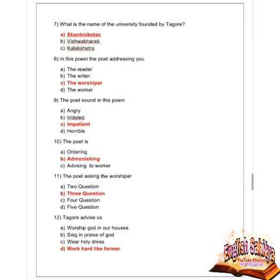Next question: what is the name of the university founded by Rabindranath Tagore? Options are Shanti Niketan, Vishwa Bharati, and Kala Kshetra. Option A is correct — Shanti Niketan. Next question: in this poem, the poet is addressing whom? Options are the reader, the writer, the worshippers, and the worker. Option C is correct — the worshippers.